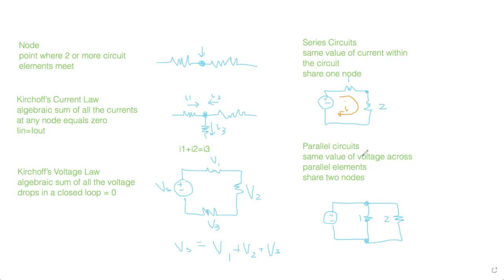The current in a series circuit is the same throughout, whereas the voltage drop across two parallel elements is the same. When solving combinations, start furthest from the source, determine whether resistors share one node (series) or two nodes (parallel), combine to one equivalent resistor, solve for current, then work backwards from the source.